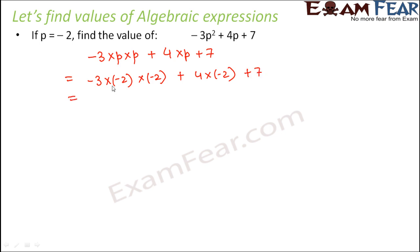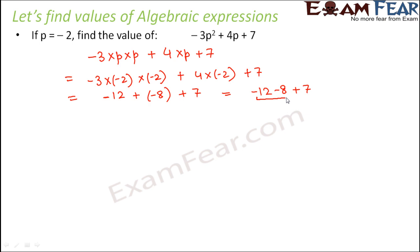Now let us try to solve this. 3 into 2 into 2 would be 12. We have 3 minus signs, so the product will have a minus sign. 4 into minus 2 would be minus 8, plus 7. So this would be equal to minus 12 minus 8 plus 7. Adding minus 12 and minus 8 gives minus 20, because both have a negative sign, plus 7. So this would be equal to minus 13. So minus 13 is the value of this expression.